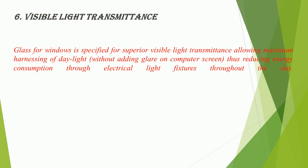Feature 6: Visible Light Transmittance — glass for windows is specified for superior visible light transmittance, allowing maximum harnessing of daylight without adding glare on computer screens, thus reducing energy consumption through electrical light fixtures throughout the day.